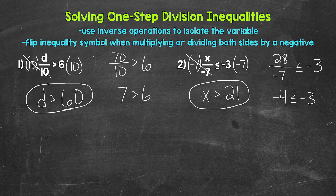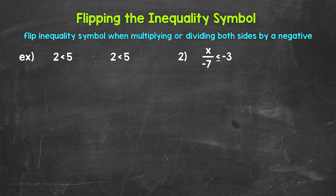Before we end, let's take a look at flipping the inequality symbol and why this happens when we multiply both sides by a negative. This will be similar to what we looked at earlier when we divided both sides by a negative. Let's start with the example: 2 is less than 5. Is this inequality true? Of course — 2 is less than 5. Let's see what happens when we multiply both sides by positive 2.